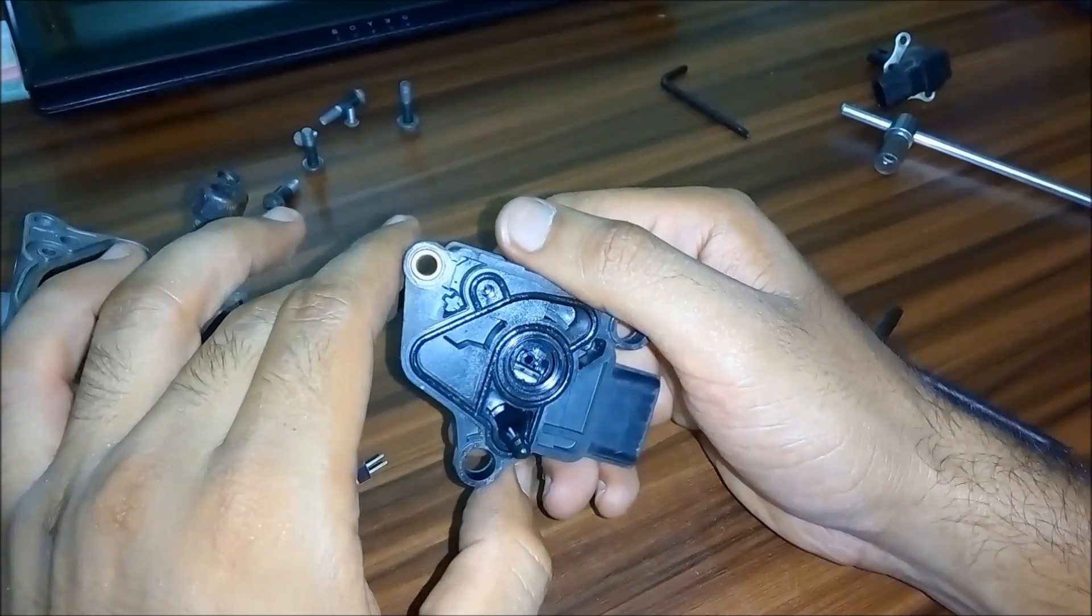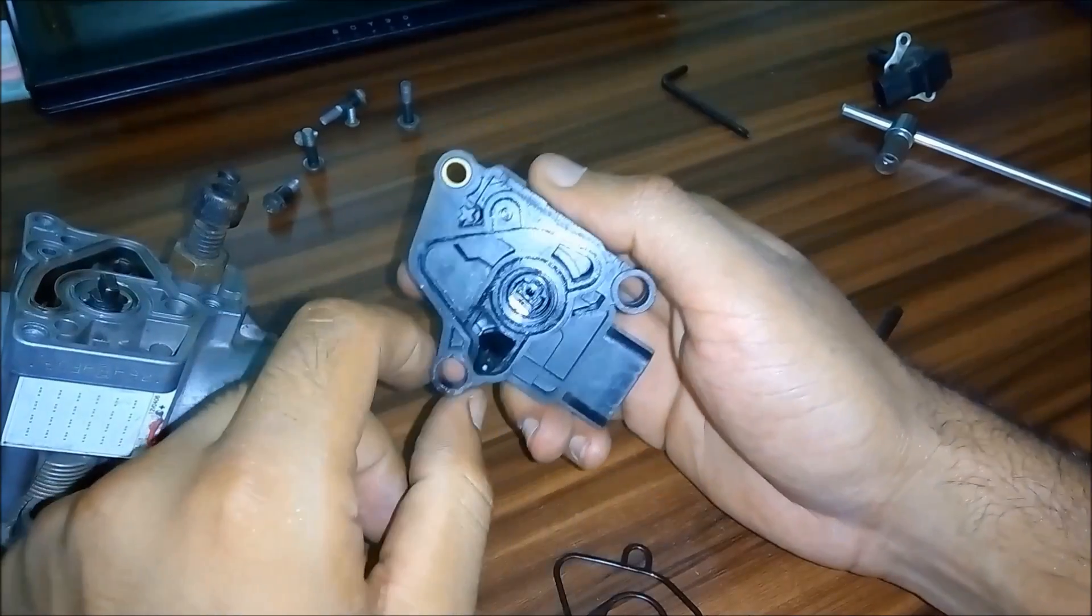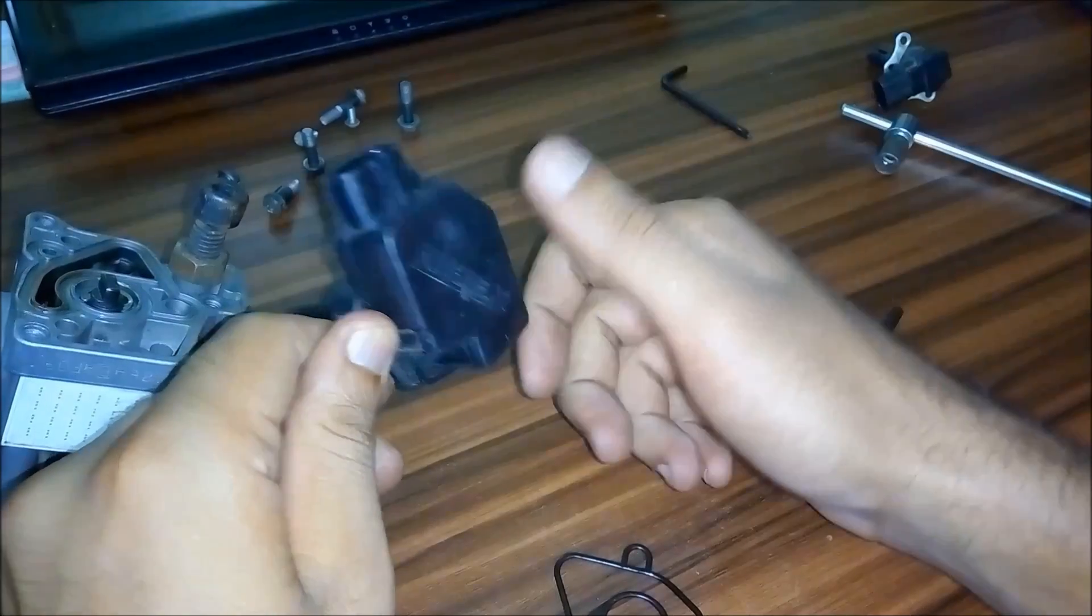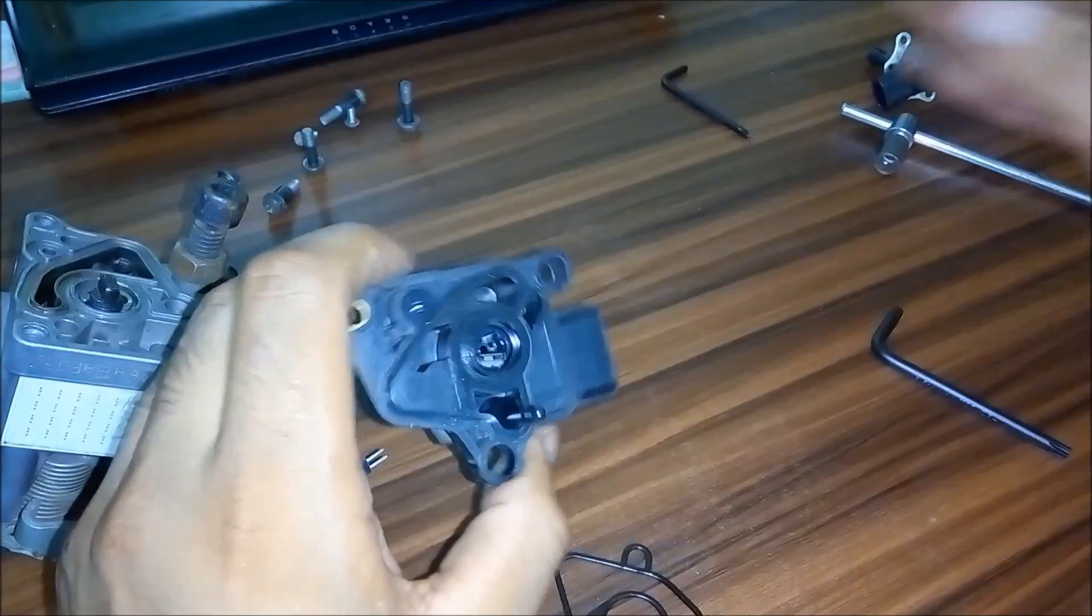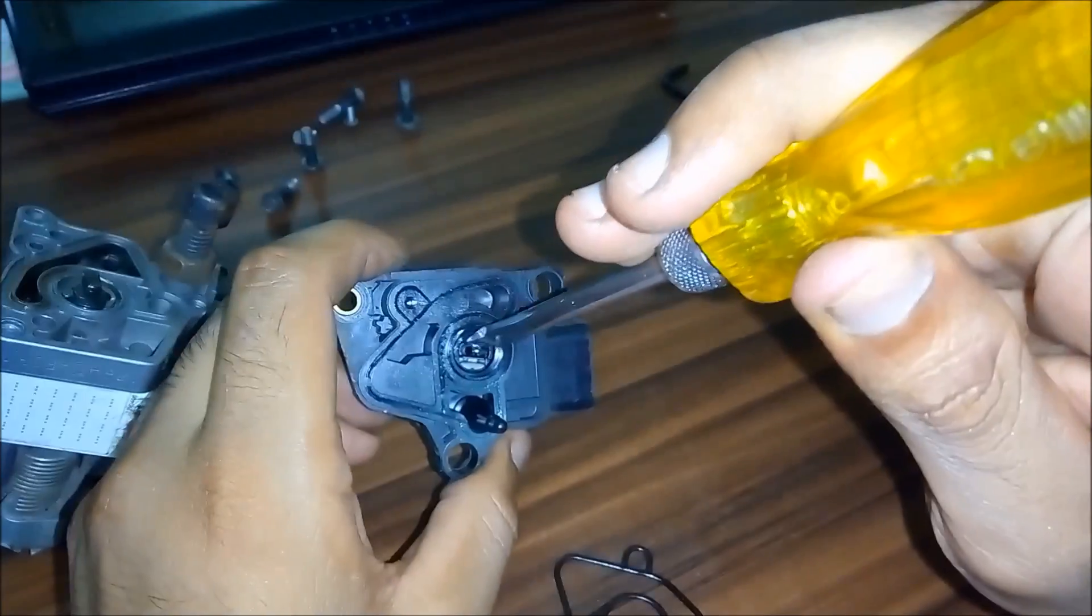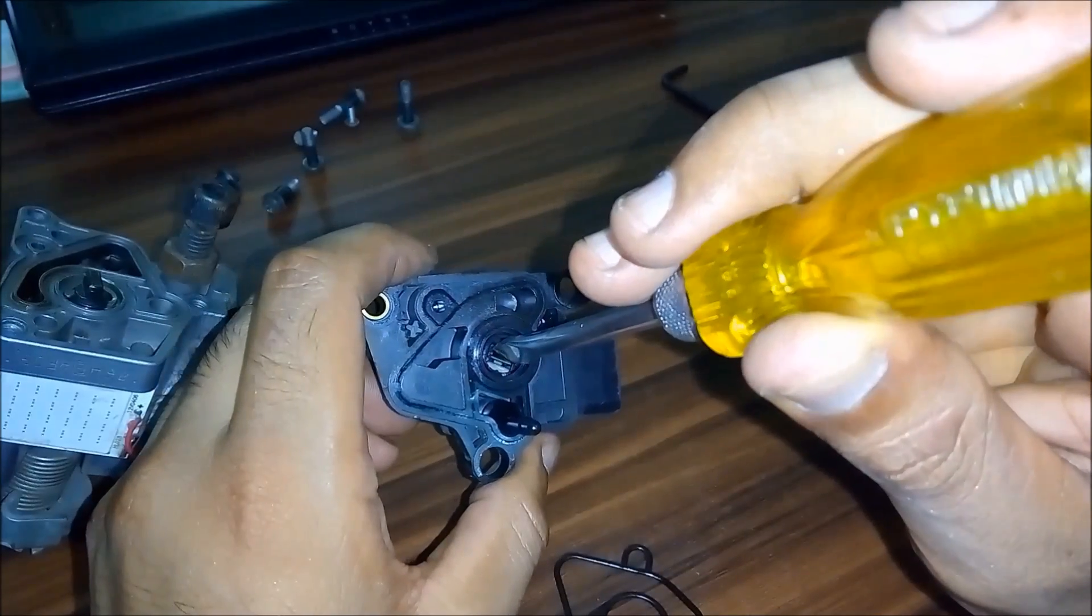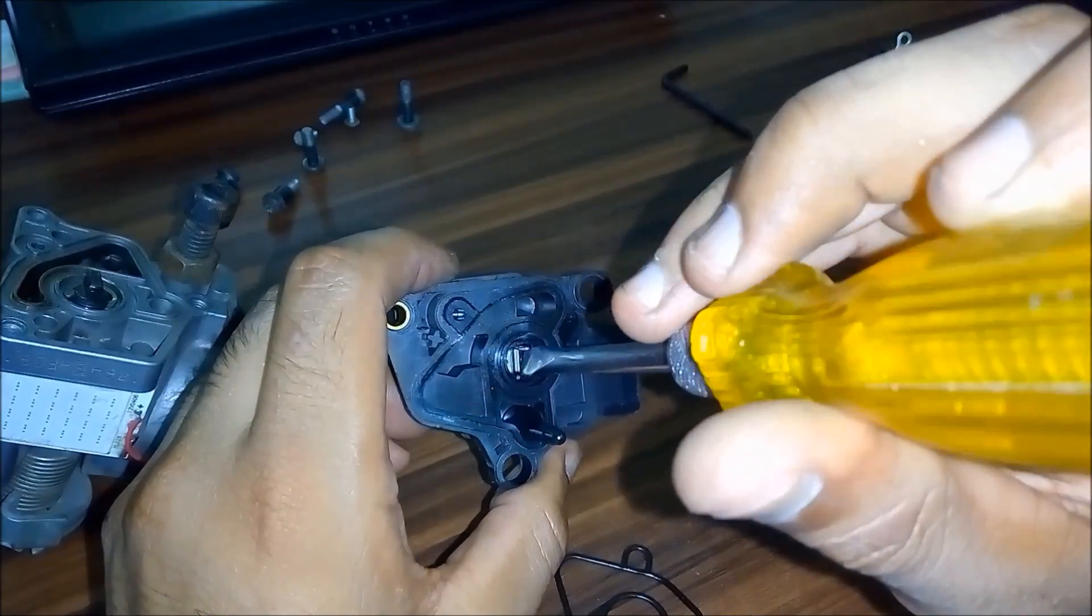There you go. Right here we have our sensor unit. This thing has three different sensors. As you can see, in front of us is a throttle plate angle sensor right here. When you rotate your throttle plate it goes like this.